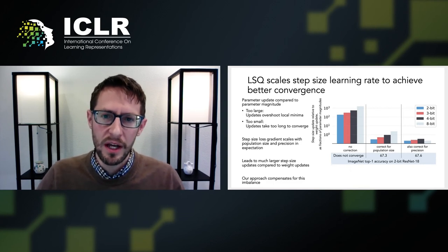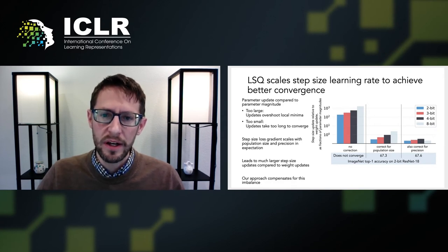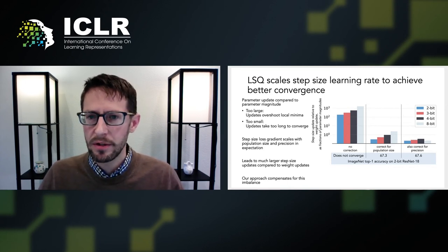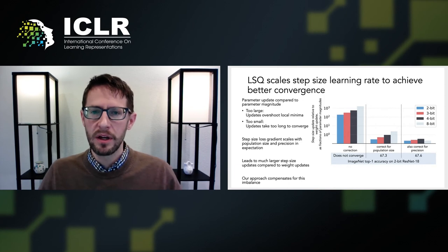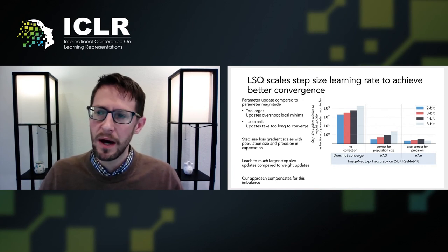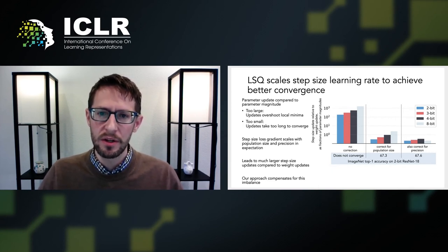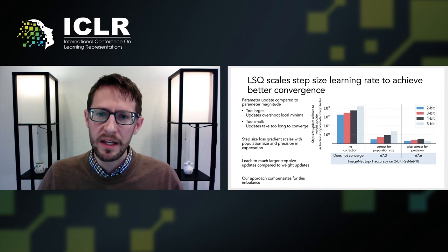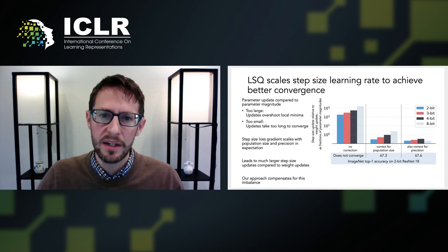In addition to this approximation, LSQ provides a principled means to scale the step size loss gradient. In learning with gradient descent, it's well known that if a parameter update is too large or too small relative to the magnitude of the parameter being updated, then poor convergence will result. We found that the magnitude of the step size update scales with the size of the population to be quantized and the bits of precision, leading to updates that are much larger than those made to network weights under most conditions and in turn poor convergence. We provide a simple correction for this imbalance by rescaling the step size loss gradient based on population size and precision, leading to an overall improvement in network task accuracy.